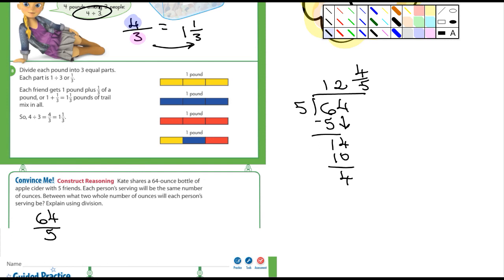So the question is here. Let's look at this question. What's it say? It says, between what two whole number of ounces will each person's serving be? Explain using division. Well, between what two whole numbers? So the whole number is 12. What's the next highest whole number past 12? It's 13. So it's between 12 and 13 ounces, because four-fifths is not a whole number. So it's not 13. It's close to 13, but not quite.